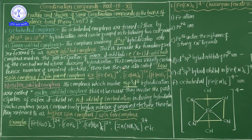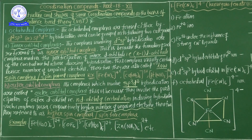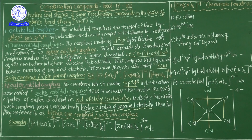All these points are clearly explained in the previous session on VBT theory. According to VBT theory: coordination number 2 gives linear shape; coordination number 3 gives trigonal planar; coordination number 4 gives tetrahedral; coordination number 5 gives trigonal bipyramidal; and coordination number 6 gives octahedral shape.